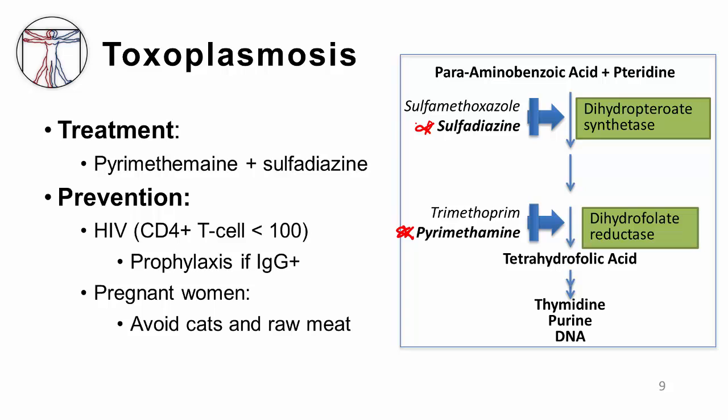For prevention, patients with HIV who have a low CD4 count — less than 100 — indicating a very immunocompromised state, and who have evidence of prior infection such as a positive IgG, are placed on trimethoprim-sulfamethoxazole for prophylaxis. We also recommend that immunocompromised patients and pregnant women avoid exposure to cats and raw meat, as those are the two primary routes of acquiring infection.